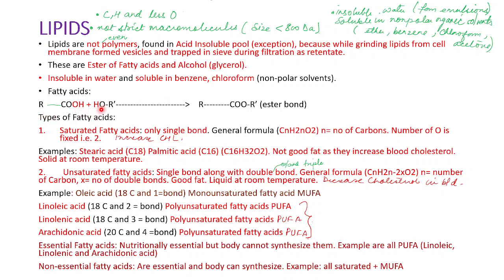Lipids are formed by an acid and an alcohol, and the ester bond is formed between them. Fatty acids are of two types: saturated and unsaturated. Saturated fatty acids contain only single bonds. The general formula of a saturated fatty acid is CₙH₂ₙO₂, where N is the number of carbon atoms and oxygen is always two. Examples are stearic acid (C18) and palmitic acid (C16). These are not considered good fats because they increase blood cholesterol and are solid at room temperature.